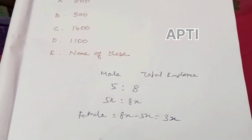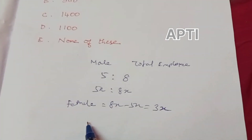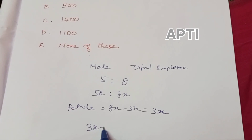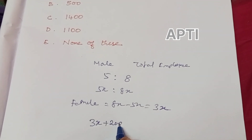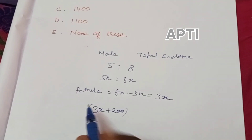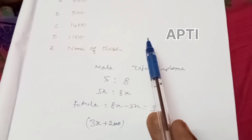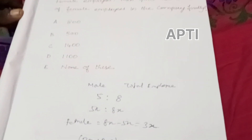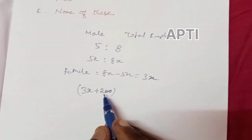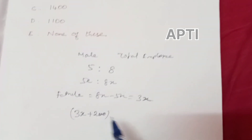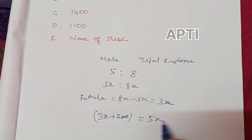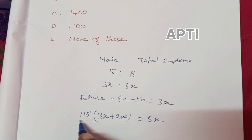Now, newly joined female employees are 200. So the number of female employees becomes 3x plus 200. The number of male employees is 5x, which is 125 by 100 times the female employees — that is, males are 25% more.